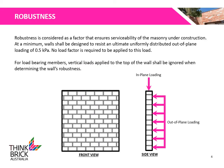Robustness is considered as a factor that ensures serviceability of the masonry under construction. At a minimum, walls shall be designed to resist an ultimate uniformly distributed out-of-plane loading of 0.5 kPa. For load-bearing members, vertical loads applied at the top of the wall shall be ignored when determining the wall's robustness.